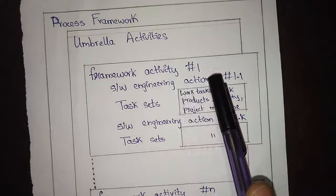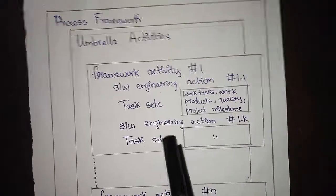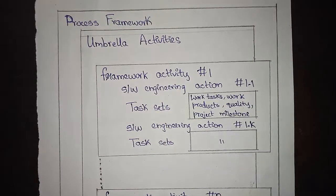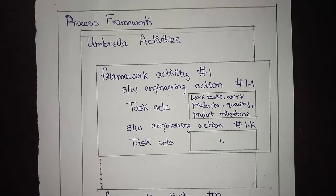That is framework activity number one. For that activity we have certain actions, and associated task sets such as work tasks and work products — for example, header files in file format. We also have quality, which has to be ensured through documentation. Additionally, we set particular project milestones to ensure we reach our goal on time and with the required quality.